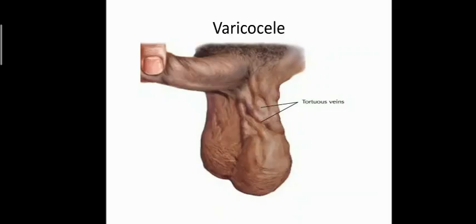Varicocele is usually asymptomatic in most cases, discovered accidentally during routine examination. Symptoms range from aching pain due to congestion or dragging pain in the cord in late cases due to prolonged standing and hot weather, to swelling which may be moderate or severe. The patient feels the scrotum as a bag of worms. It may be complicated with thrombophlebitis leading to severe pain. The most common presentation is actually infertility.